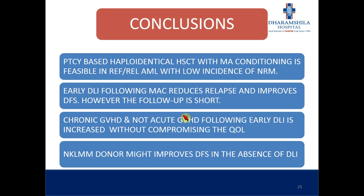In conclusion, PTCY-based haploidentical transplantation with myeloablative conditioning is feasible in relapsed refractory AML with a low incidence of NRM. Early DLI following myeloablative conditioning reduces relapse and improves disease-free survival, though the follow-up is short. Chronic GVHD — not acute GVHD — following early DLI increases without compromising quality of life. NK-ligand mismatched donor may improve disease-free survival in the absence of DLI, but if you don't have an NK-ligand mismatched donor, DLI definitely works.